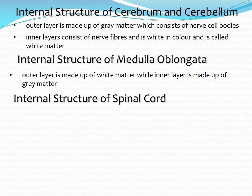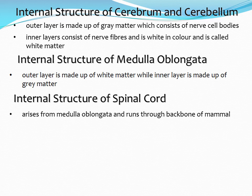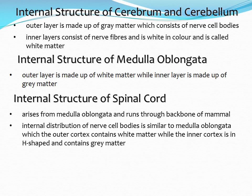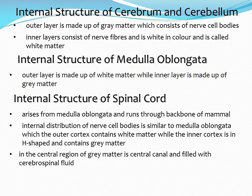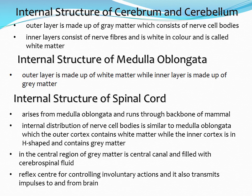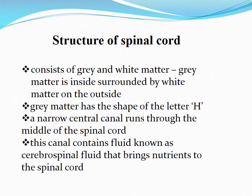Now I am moving to today's topic: the internal structure of the spinal cord. The spinal cord arises from the last part of the brain, that is the medulla oblongata, and runs through the backbone. The internal distribution of nerve cell bodies is similar to the medulla oblongata — the outer cortex contains white matter while the inner cortex is H-shaped and contains gray matter. In the central region of gray matter there is a central canal filled with cerebrospinal fluid. It is the reflex center for controlling involuntary actions and also transmits impulses to and from the brain.